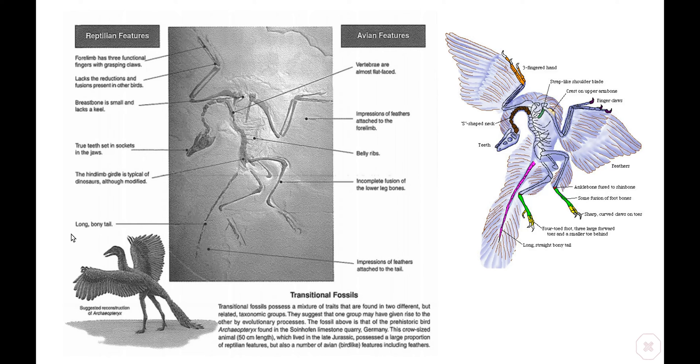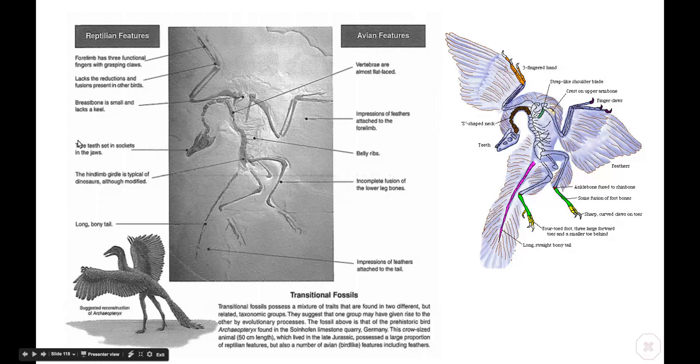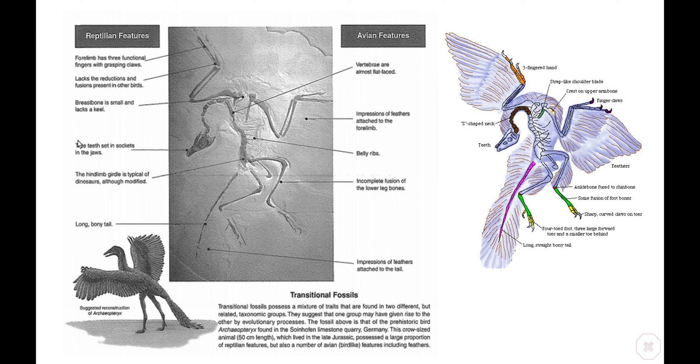So some of the ones, for example, obviously avian features where they have feathers attached to the forelimbs, they have incomplete fusion of the lower leg bones, which obviously helps them to be able to fly, impressions of feathers attached to the tail. We know that reptiles don't have feathers. We have teeth in the socket of the jaw, which is something that modern birds do not have. Modern birds do not have teeth. Modern birds do not have a long, bony tail. Obviously that would hinder their ability to be able to fly.